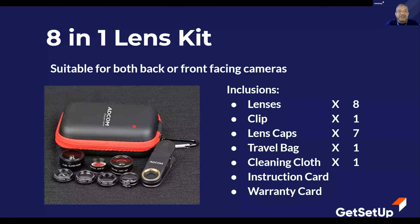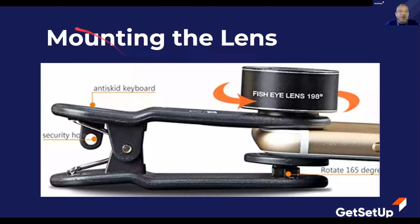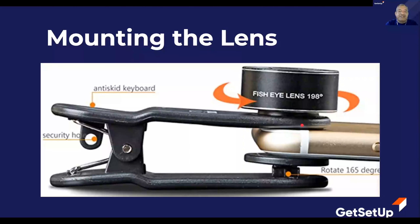Now, how do we mount these lenses? The clip is like a paper clip — we mount the lens on the clip and the clip goes onto the camera. If we have multiple camera lenses on the phone, we must mount this clip on the main camera lens. It is very safe because there are silicone pads in the clip and they do not scratch the lens.